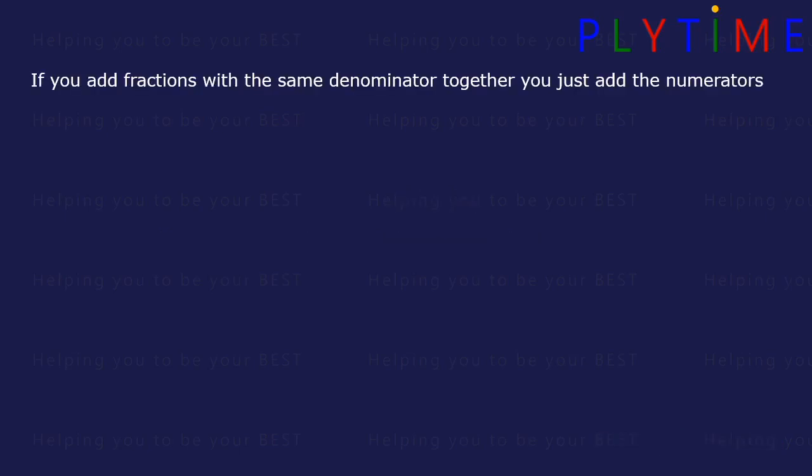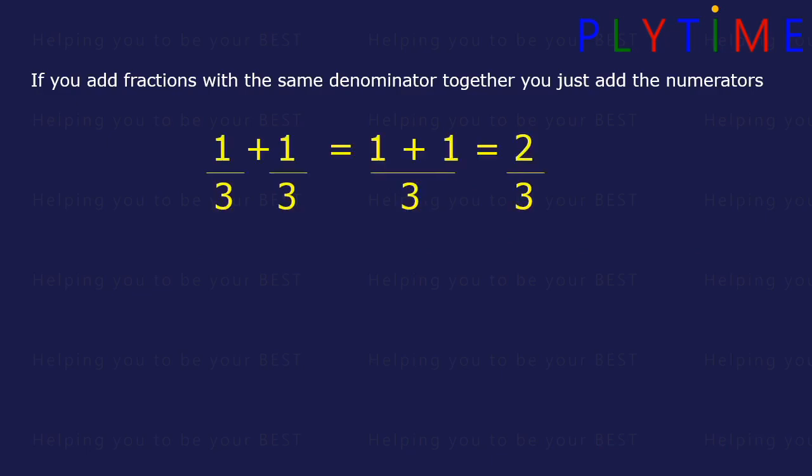If you add fractions with the same denominator together, you just add the numerators. 1 third plus 1 third is the same as 1 plus 1 over 3, which equals 2 over 3, or 2 thirds.